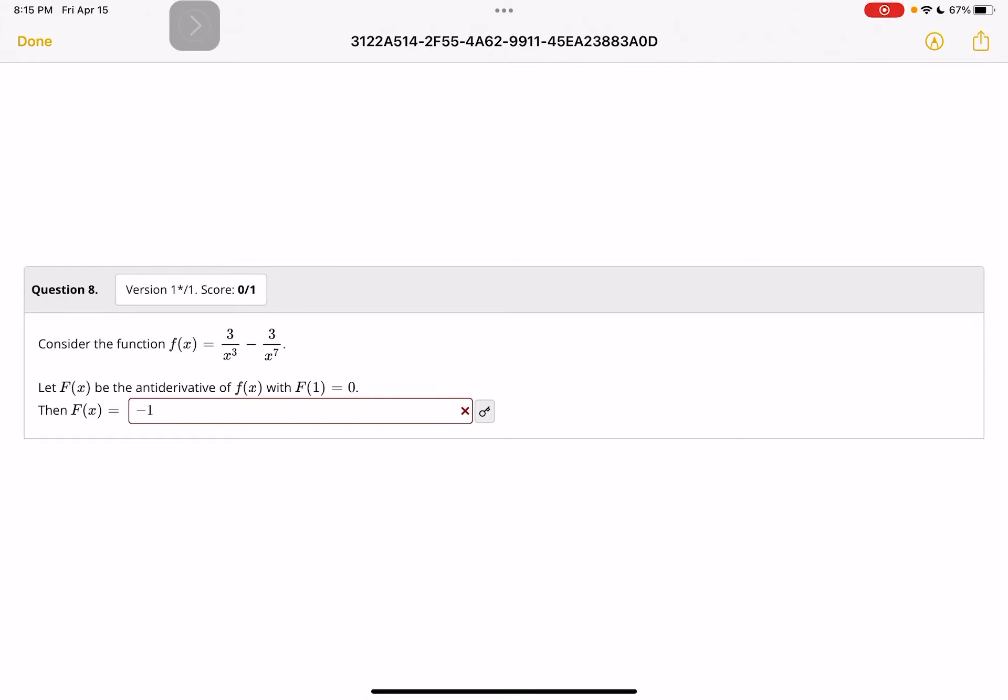Here's another problem. It says consider the function f(x) equals 3 over x cubed minus 3 over x to the seventh. Let capital F(x) be the antiderivative of lowercase f(x) with the initial value condition F(1) equals zero.